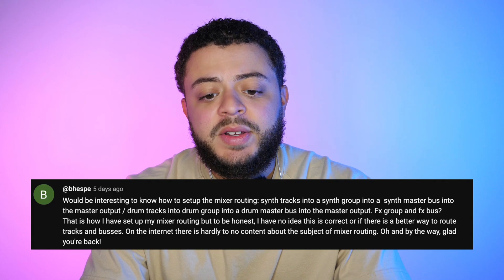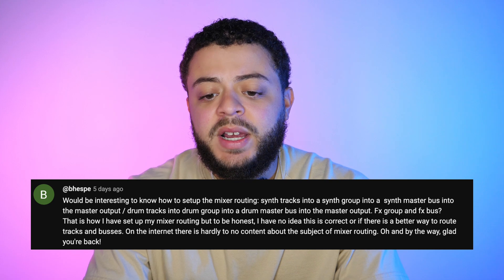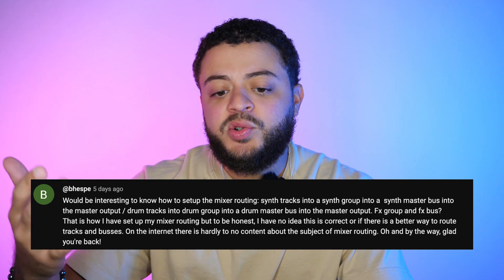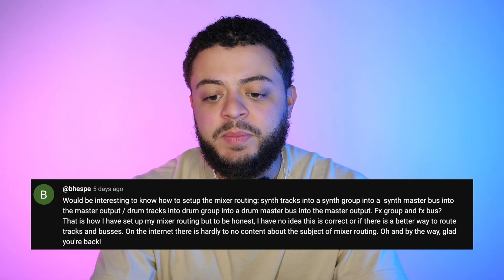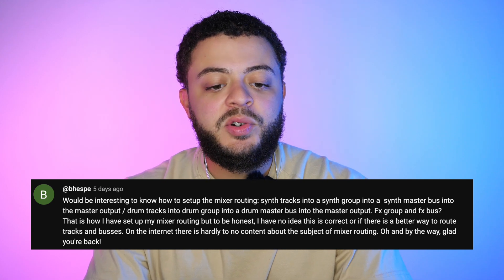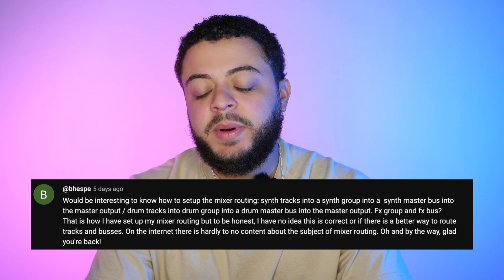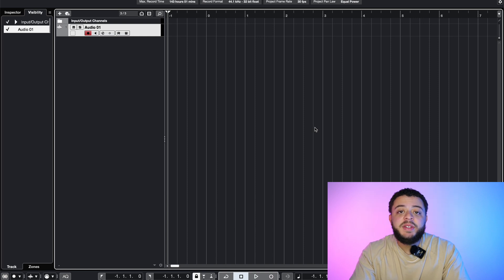The first question is by B. Hespi and he's asking: it would be interesting to know how to set up the mixer routing. For example, synth track into synth group into synth master bus, and then also a drum group, drum master into a master output, effects bus. He says he has no idea if this is correct or if there's a better way to route tracks or buses, and on the internet there's hardly any content about this subject matter. So thank you B. Hespi for the question. We're going to dive into Cubase right now and check out how to group your tracks and bus them. There really isn't a right or wrong way — it's more of a workflow thing. I'm going to show you how I would set up my buses with groups, master tracks, and a sub mix.